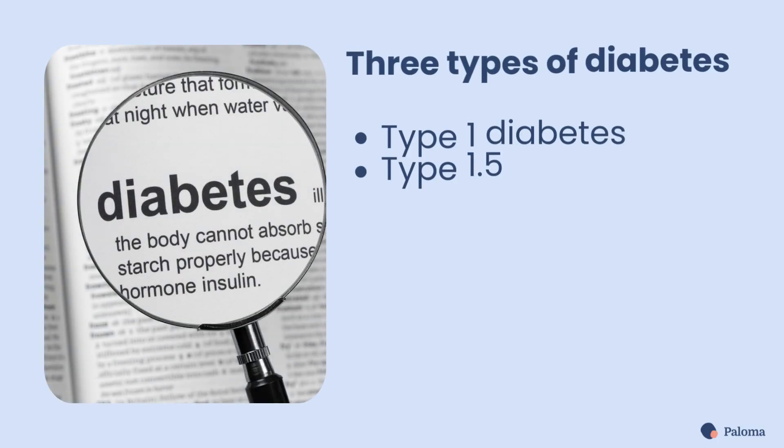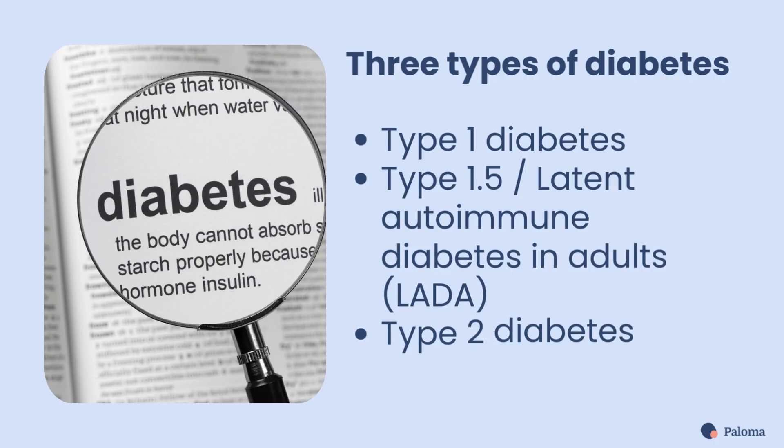There are three main types of diabetes, each with different links to thyroid disease. There's type 1 diabetes, type 1 and a half — also known as latent autoimmune diabetes in adults, or LADA — and type 2 diabetes.